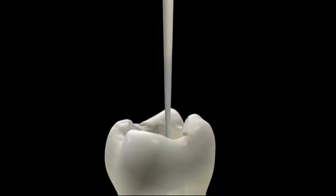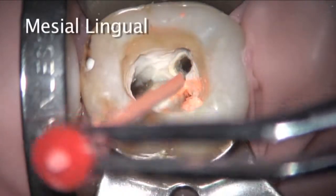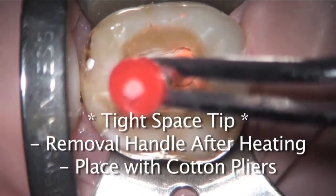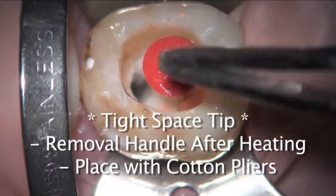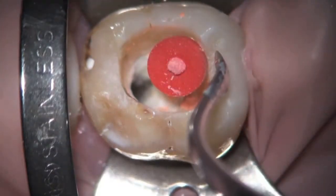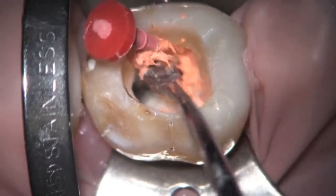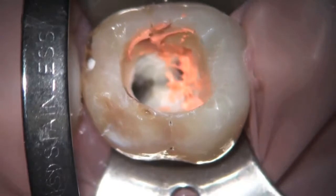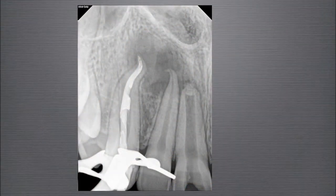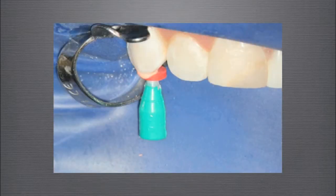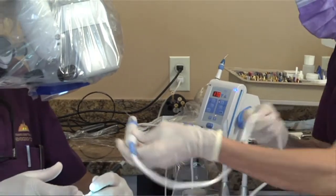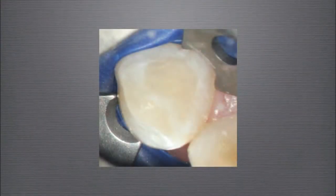Sealer was placed in the canal using a paper point, and a number 35 GuttaCore carrier was inserted into the canal. A PA radiograph was taken to confirm obturation. Note some voiding in the apical area, as well as the mid and coronal third of the root. This was a result of a very large canal, which required more gutta-percha. To resolve the voiding at the apex, moderate finger pressure was applied to the carrier handle for one minute in an apical direction. I then used my Calamus Dual to create space next to the GuttaCore carrier, and subsequently added more warm gutta-percha. The tooth was restored, and here is the final result.